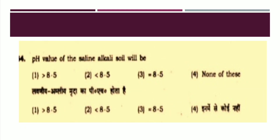The next question: pH value of the saline alkali soil will be. The options are: Greater than 8.5, Less than 8.5, Equal to 8.5, or None of these. The right answer is Option number two: Less than 8.5.